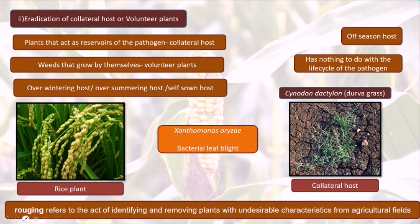An important term here is rogging. Rogging is the act of identifying and removing plants with undesirable characteristics from agricultural fields. It is the process by which we remove all plants that are not desirable from the field.